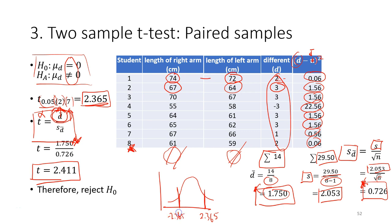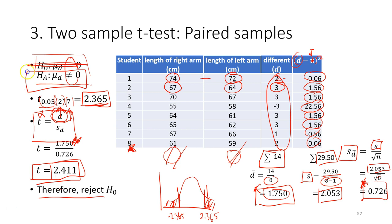Compare the test score with the critical value. Imagine a curve where the critical value is at 2.365 and negative 2.365, defining the critical region. Since the calculated t of 4 falls in the critical region, we reject the null hypothesis. The conclusion is that there is a significant difference between the length of the right and left arm of the students.